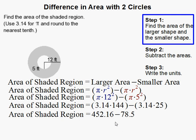Alrighty, then you multiply these out, and with the magic of computers I got 452.16 and 78.5. This is the small area here, and this is the larger area.